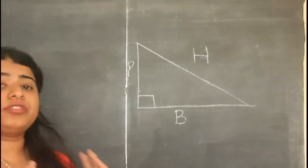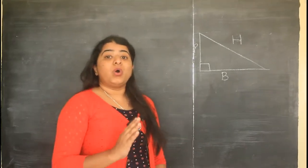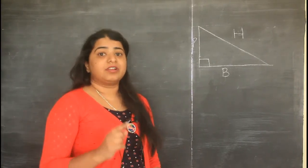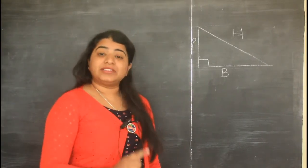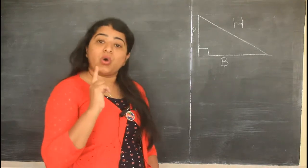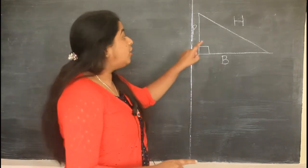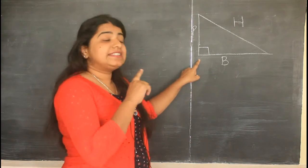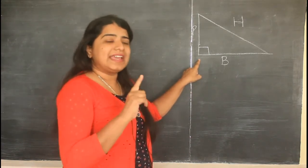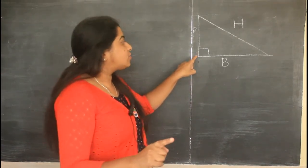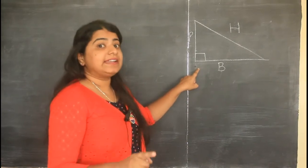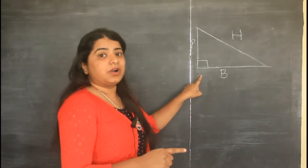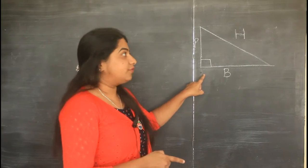There are four things that you should remember while learning about Pythagoras theorem. Firstly, Pythagoras theorem works only and only on a right angle triangle — it does not support any other triangle. So only if your triangle is right angled, the Pythagoras theorem works.